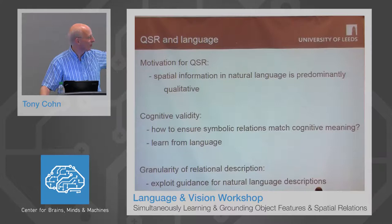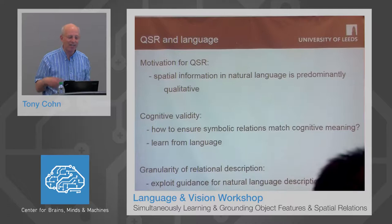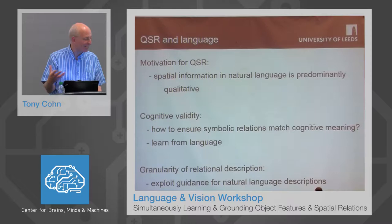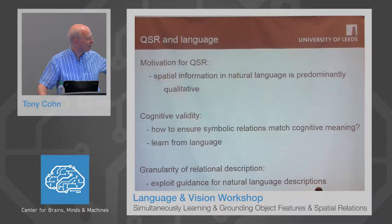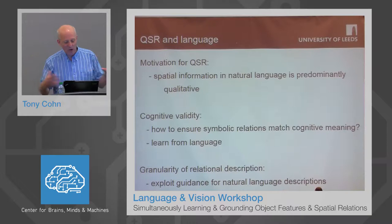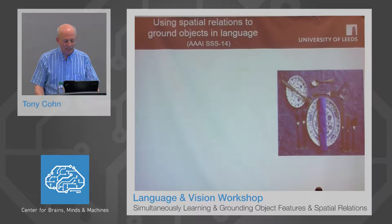There's an argument that says maybe we should actually try to learn the qualitative calculi from language. If we learn from both language and vision, we can try to learn the metric distinctions of when to describe a scenario as being in one spatial relationship versus another — because most work in qualitative spatial representation has ignored that link going from the real world, from vision and perception, to the qualitative abstraction. There's also the question of how we know what's the right level of relational granularity — for example, RCC5 versus RCC8.